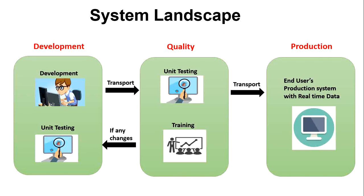Once testing is complete in the development server, we move the changes and objects from the development server to the quality server using the TR. In the Quality Assurance system, all developed objects are tested with different test cases and scenarios. If we get the desired output, we proceed further; if any bug is found, we ask the ABAP developer to make changes, and the same process is repeated. Once satisfied, the functional consultant provides training to the client on how the process works.